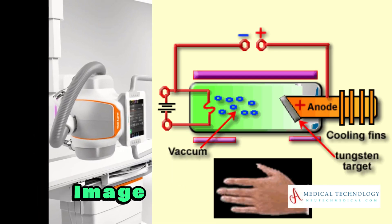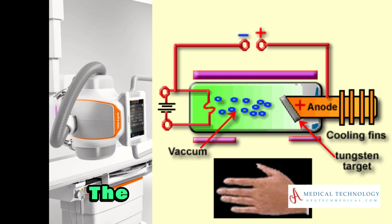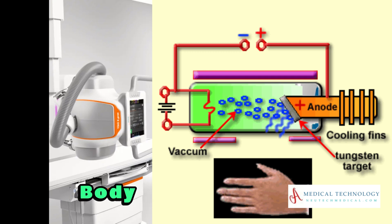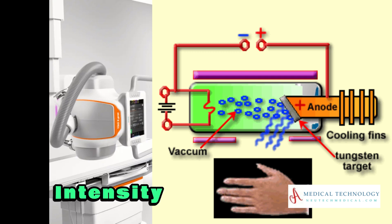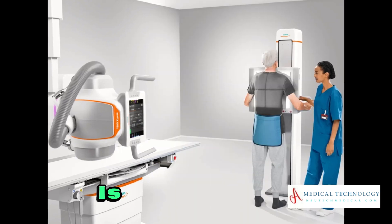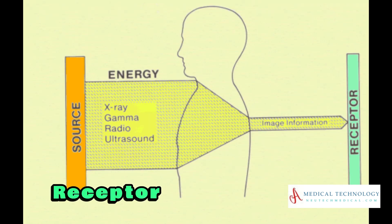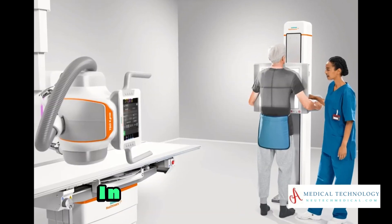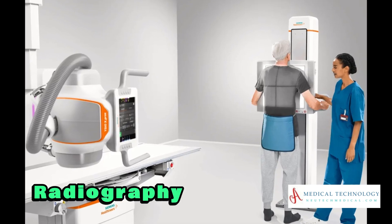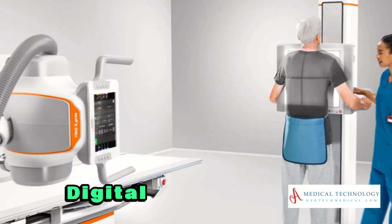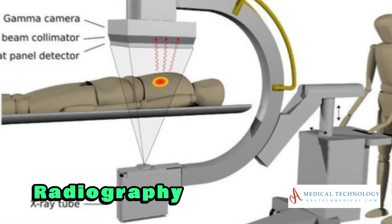Radiographic image capture. The X-rays pass through the patient's body, and the intensity of the X-rays that reach the image receptor is detected. The image receptor can be a film cassette, in traditional radiography, or a digital sensor, in digital radiography.